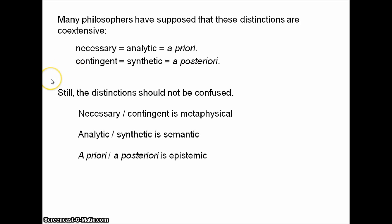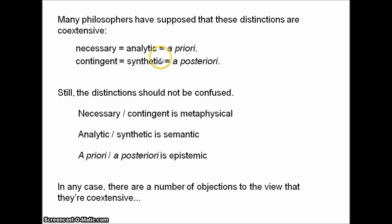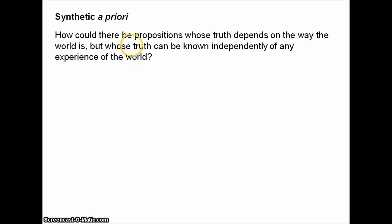Although they might look coextensive, there are a number of objections to this view. Can we have synthetic a priori propositions? Can there be propositions that are true not just by virtue of their meaning but also by virtue of the way the world is, yet can also be known independently of any experience of the world? A priori, this does look like a rather odd claim, but it's not immediately contradictory.